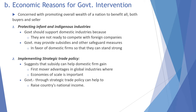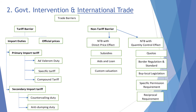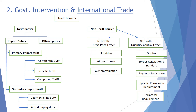Government intervention and international trade — trade barriers — there are two types: tariff and non-tariff. Under tariff there are two types: import duties and official pricing. Under import duties there are primary import tariff and secondary import tariff.